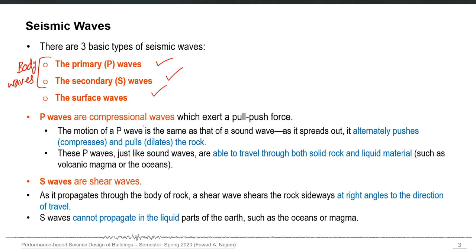P waves are compressional waves which exert a push and pull force, just like sound waves are longitudinal or compressional waves. The motion of a P wave is the same as that of a sound wave — as it spreads out it alternately pushes and pulls the rock. P waves are able to travel through both liquid as well as solid rocks, so they can travel through molten rocks, magma, or through oceans.